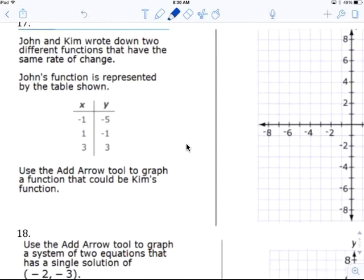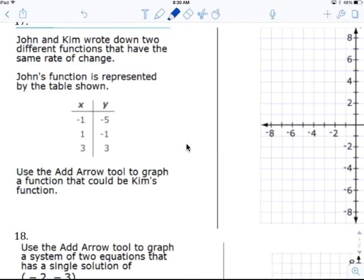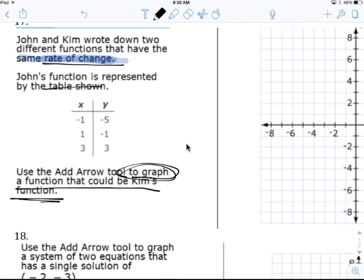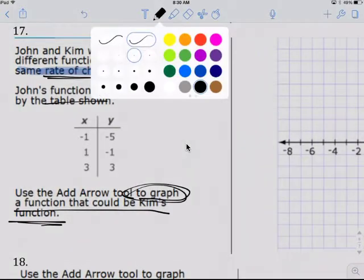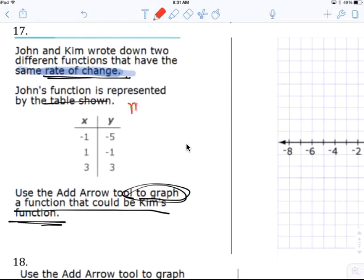John and Kim wrote down two different functions that have the same rate of change. Here's the key: same rate of change. John's function is represented by the table. Use add arrows to graph. We need to graph a function that should be Kim's. They're the same rate of change. So here's John's function. We need to find John's rate of change. M equals slope equals Y2 minus Y1 over X2 minus X1.